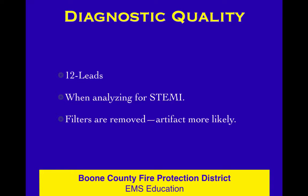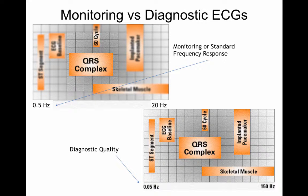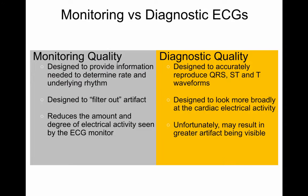Diagnostic quality takes off all the filters — however, that means more artifacts are going to get through. Here's an interesting diagram: in monitoring quality you can see the QRS, but the rest is filtered out. In diagnostic quality, all the various interferences are now seen — you see all the junk, but you can make fine analysis of the ST segment. There's also a very good side-by-side summary of monitoring and diagnostic quality. Diagnostic is what we're looking for: you get a little more artifact, but it lets you look at ST segment changes, and that's what you get with the 12-lead.